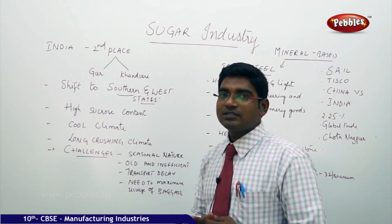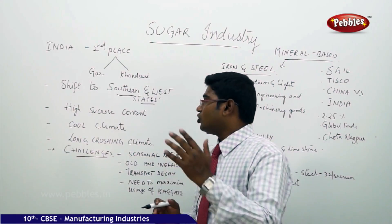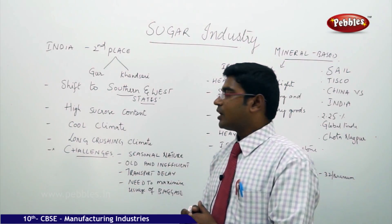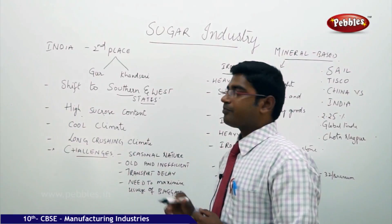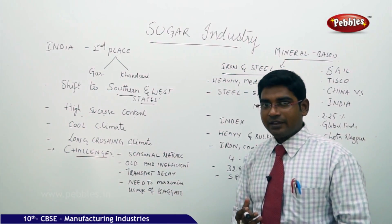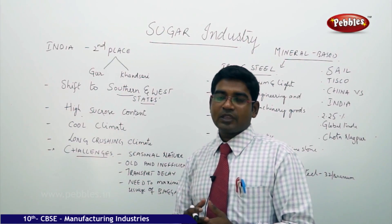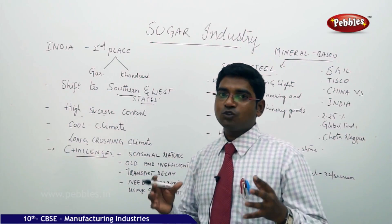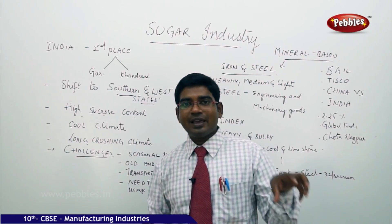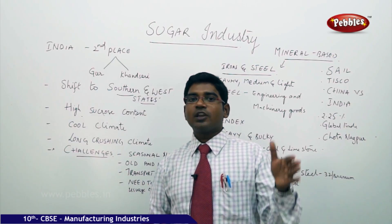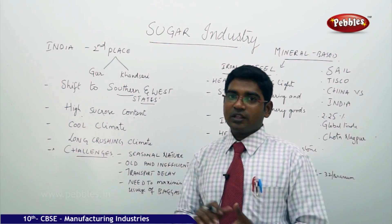What are the reasons that made the establishers of the sugar industry migrate from the northern states towards the southern and western states? The first point we need to understand is the high sucrose content. The sucrose content is available in a very high range in the south, and it is very difficult to transport sugarcane with high sucrose content over long distances. The sugarcane has to be transported very soon to the nearest sugar mill where processing can be done — only then can the sucrose content be preserved.